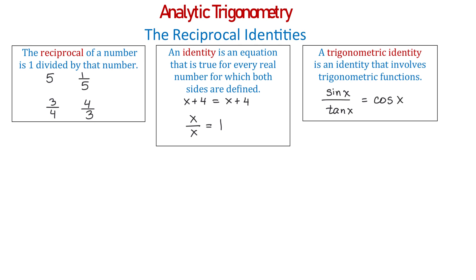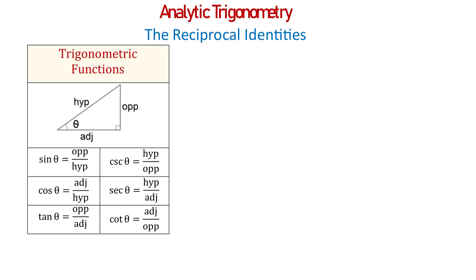To better understand trigonometric identities, let's take a quick look at the definition of trigonometric functions using a right triangle. Here we have a right triangle with an acute angle theta, and this is the opposite side for this angle, this is the adjacent side, and this is the hypotenuse. Sine of angle theta is defined as the opposite divided by the hypotenuse. To the right we have the cosecant function, defined as the hypotenuse divided by the opposite. Because the numerator and the denominator are interchanged, we can say that these two functions are reciprocals of each other.